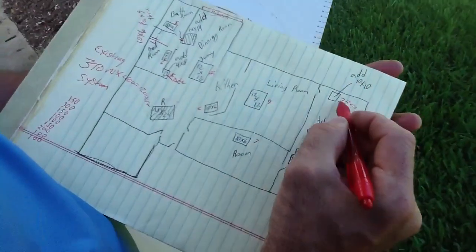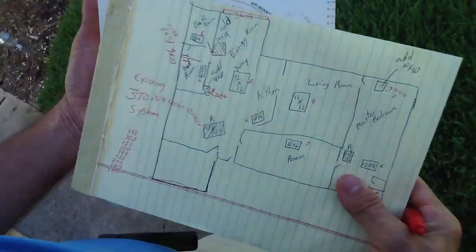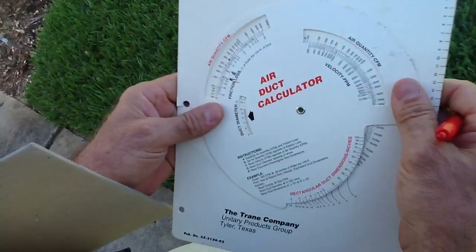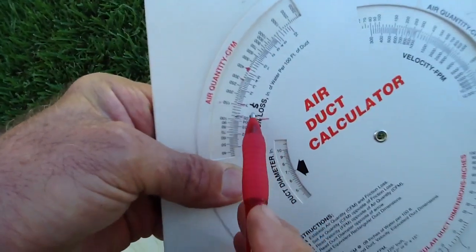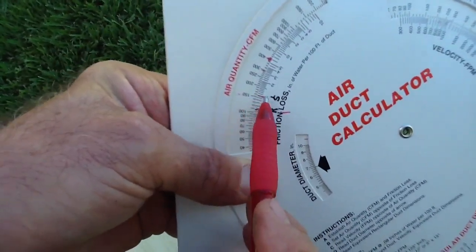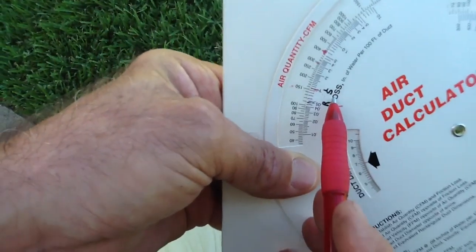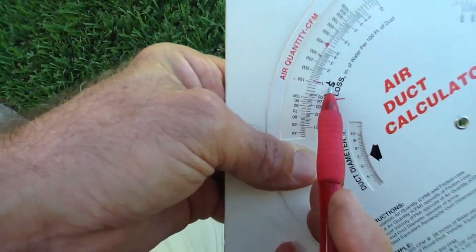Now what I've done here is I'm going to show you real quick. A seven-inch flex is good for 150 CFMs at a 0.1 static pressure. Always reduce that because this is not a flexible ductulator, this is a metal ductulator.